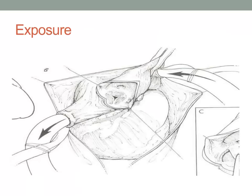Of paramount importance regardless of any proposed technique is exposure of the left ventricular outflow tract. In many instances, a complete division of the ascending aorta approximately 1 cm above the sinotubular junction provides excellent exposure to the aortic valve and left ventricular outflow tract. Stay sutures may be placed into the wall of the aorta to help retract tissue and appropriately identify the coronary ostia, native valve architecture, and commissures as well as the subaortic region.